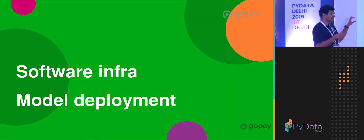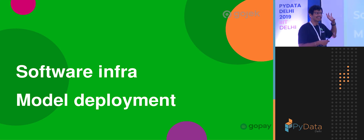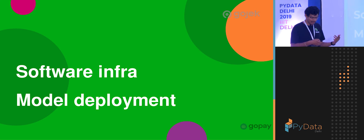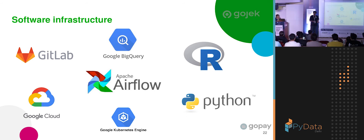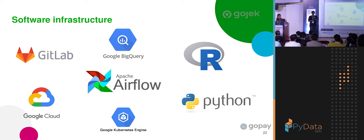Now let's look at the tech part of this story — how have we thought about orchestrating this? We are largely on the GCP stack within GoPay data science. The primary orchestrator is Apache Airflow, which provides a neat way to schedule complex multi-step tasks at certain frequencies. Our data largely lives in Google BigQuery, and given our use cases are very batch-oriented — every month or every few days we want to figure out whom to provide incentives to — BigQuery serves that well as a big data store.